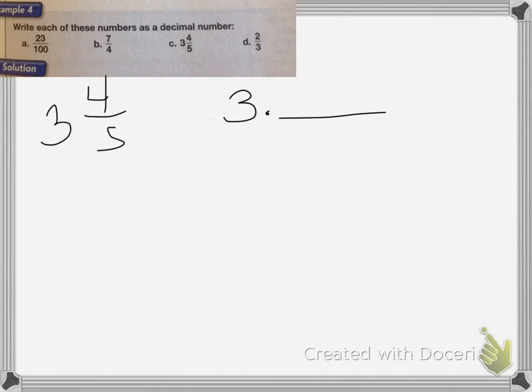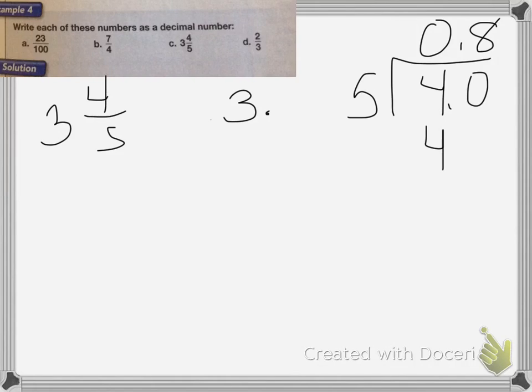I'm going to go ahead and divide the 4 fifths to figure out what my decimal will be. So we have 4 divided by 5. 5 goes into 4, 0 times, decimal goes straight up. 5 goes into 40 8 times, which is 40. So my answer is going to be 3 point 8 for C.